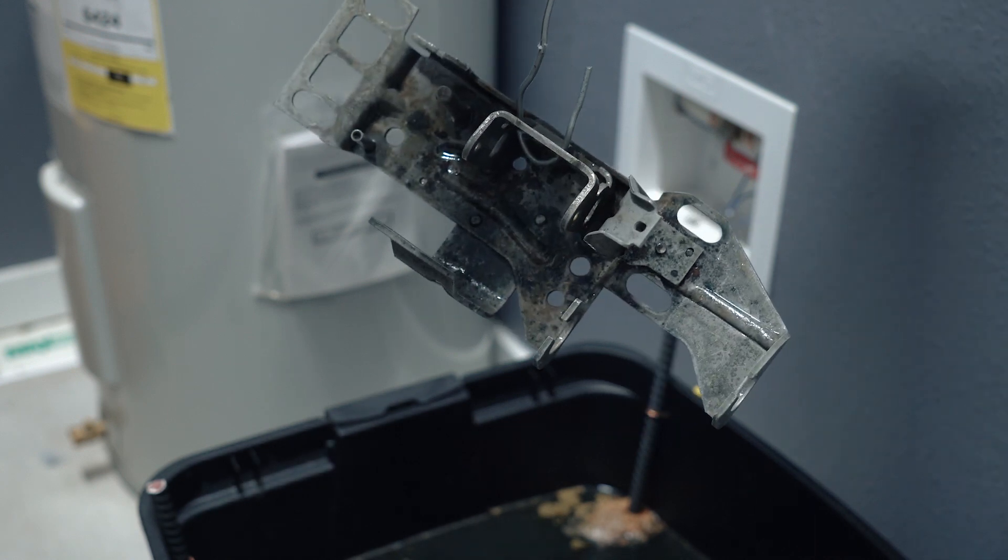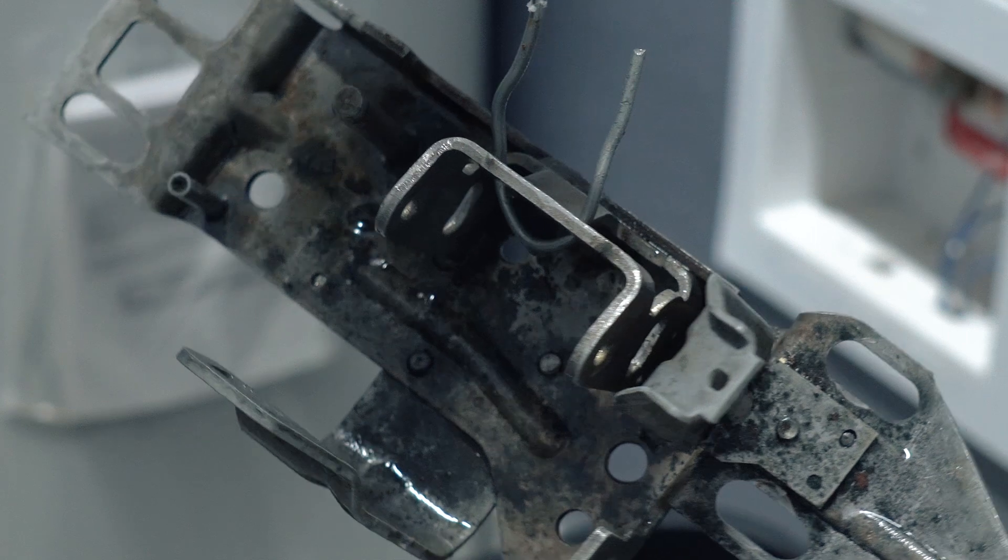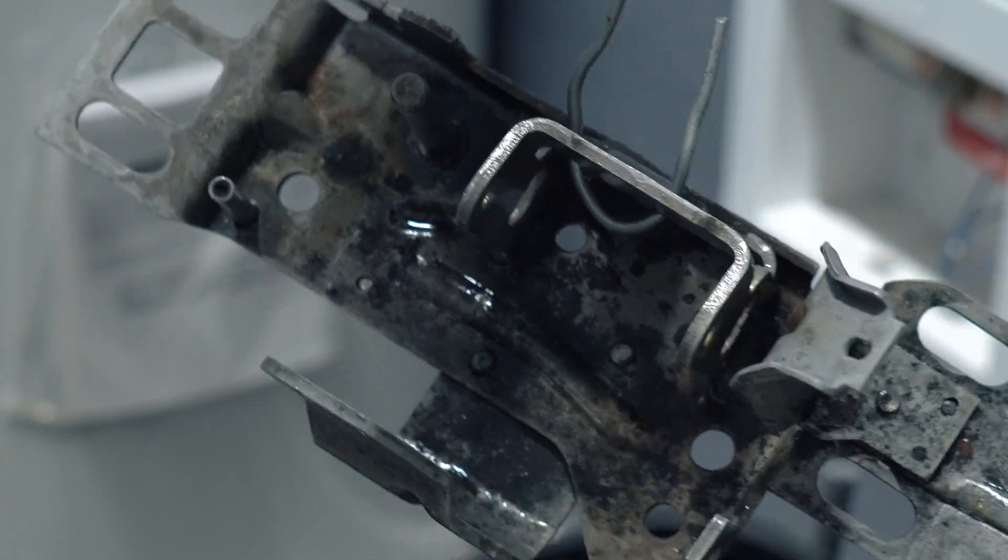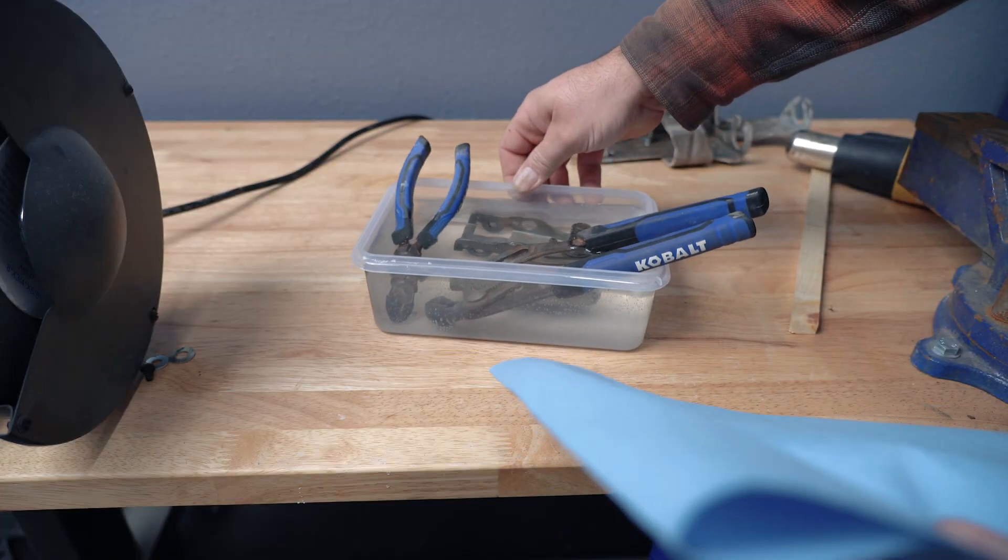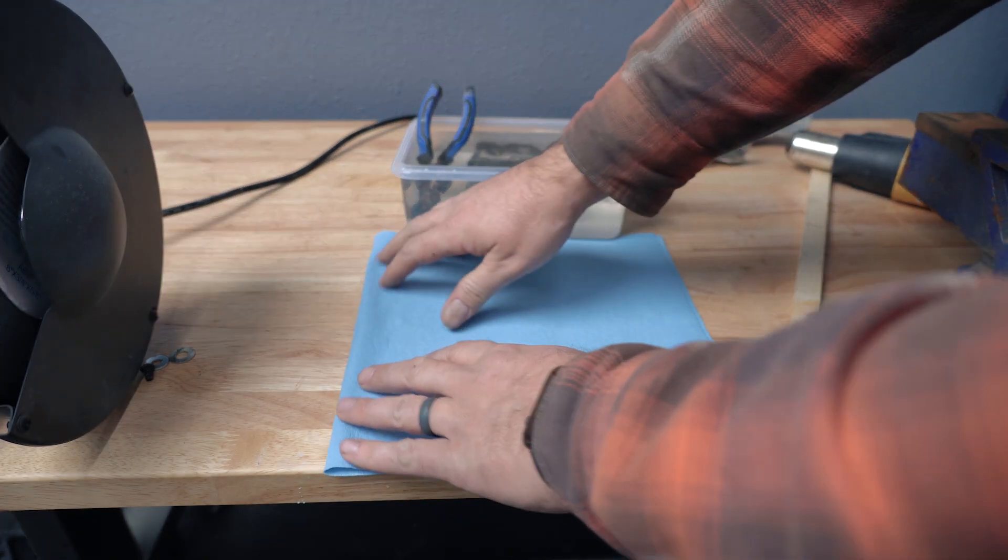The biggest problem I had after the electrolysis was flash rusting. I've since read that you can immediately spray the piece with some WD-40, which is apparently made to displace water. So you spray it with WD-40 and immediately dry it off to prevent some, if not all, flash rusting.